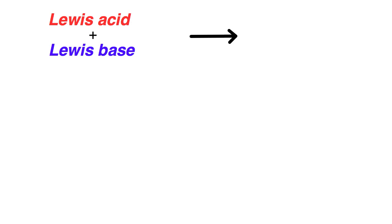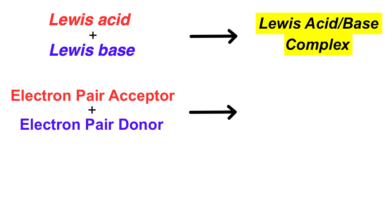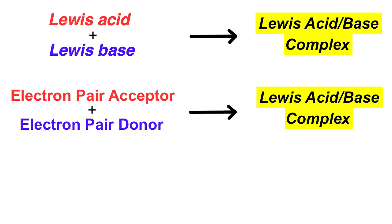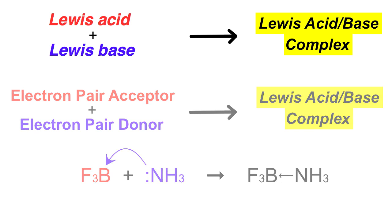Lewis acid plus Lewis base gives a Lewis acid-base complex. An electron pair acceptor plus an electron pair donor — another way of saying the same thing — gives a Lewis acid-base complex. For example, boron trifluoride and ammonia, with a curly arrow, gives the Lewis acid-base adduct of ammonia and BF3.